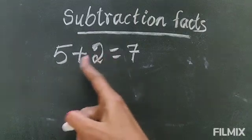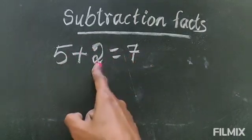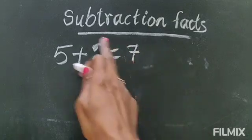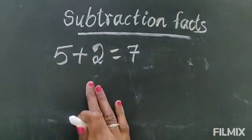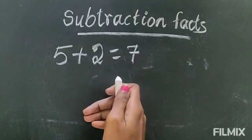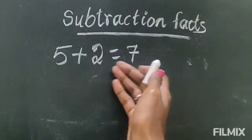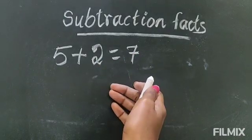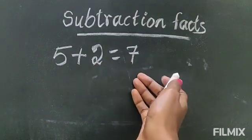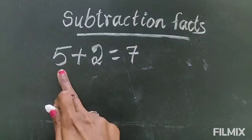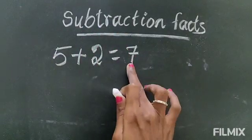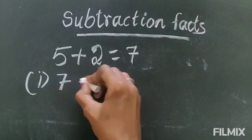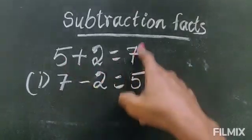When you write the subtraction fact you will use only the 3 numbers — here 5, 2, and 7. Only these 3 numbers you will use. Now you are going to write the subtraction — which 2 numbers if you minus you will get the third number? You can find it easily. 7 minus 2 you will get 5. This is the first subtraction fact: 7 minus 2 equals 5. Only these 3 numbers are used.